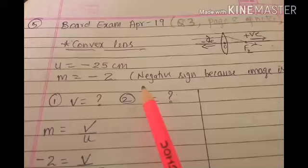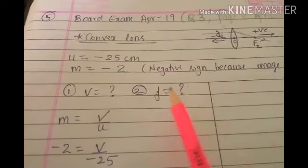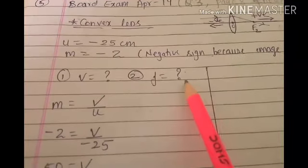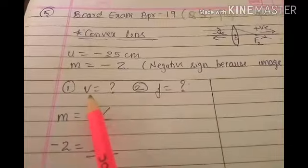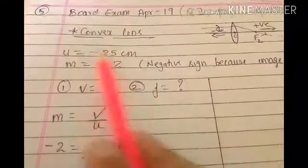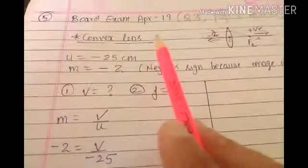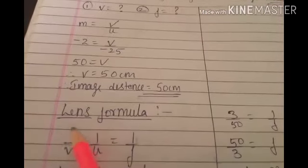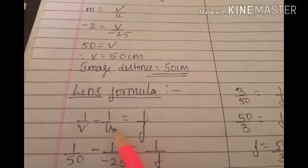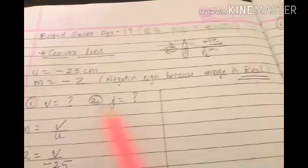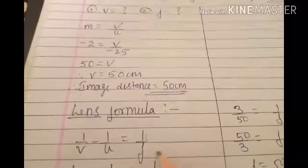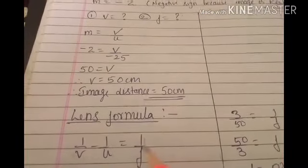Calculate the image distance V and focal length F of the lens. To find V, we use the lens formula: 1/V - 1/U = 1/F. But we don't know V and we don't know F, so how will you use this formula when two things are unknown?